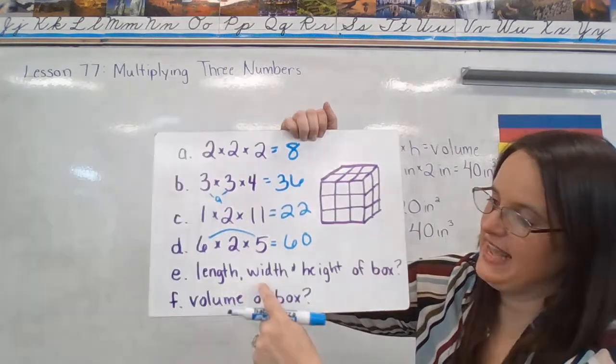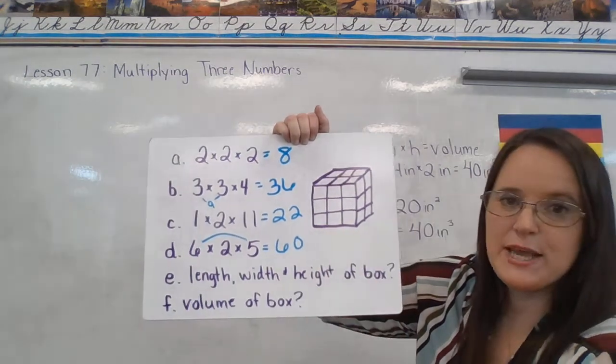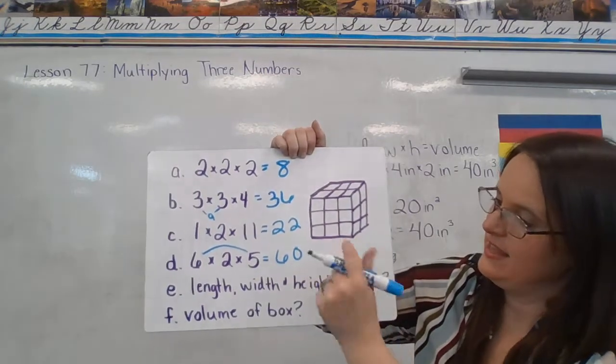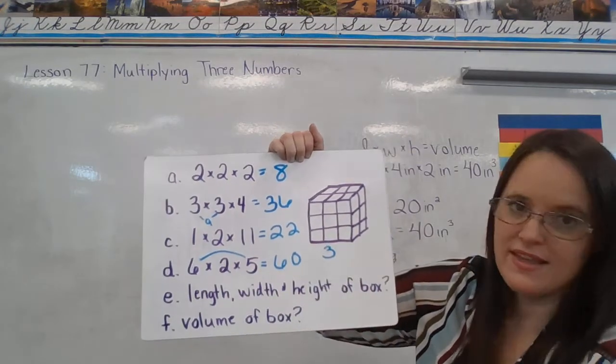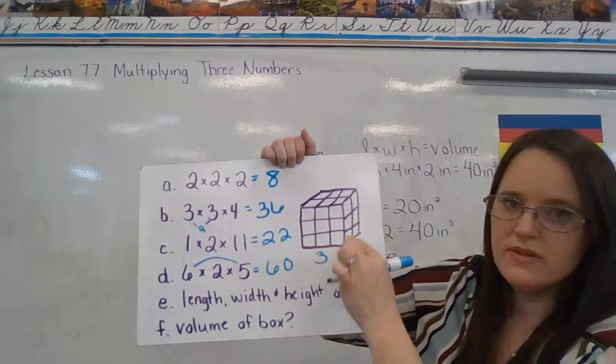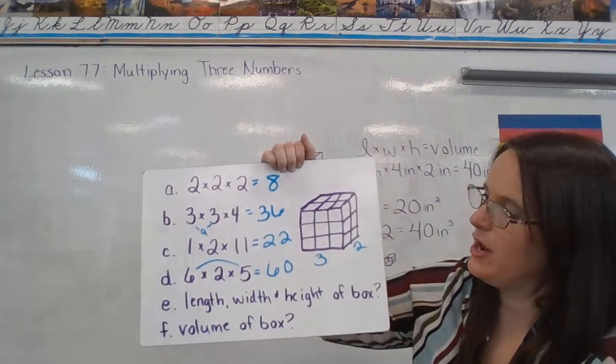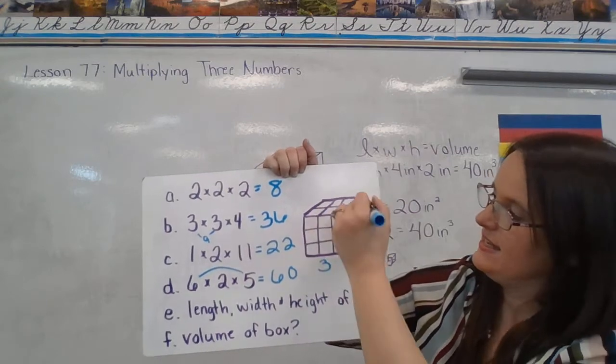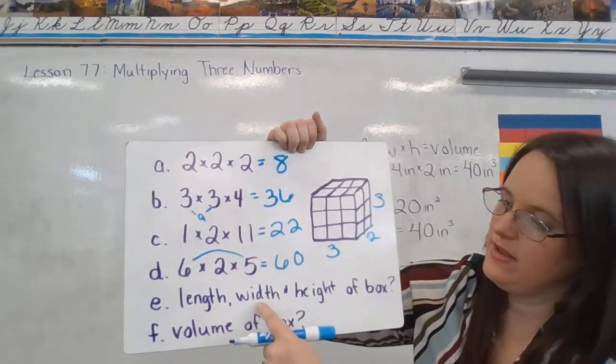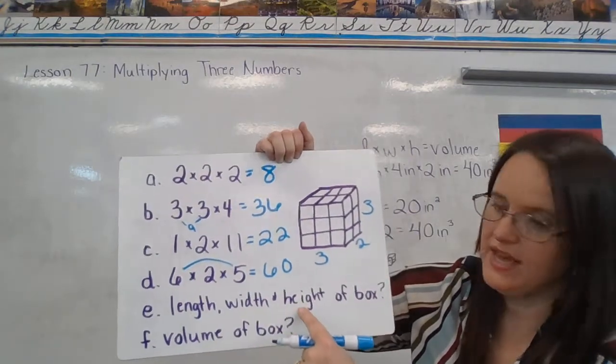Okay. Now we're going to find the length, the width, and the height of this box right here. So my length is 3. My width is 2. That distance going back there. My height is 3. So length 3, width 2, height 3.